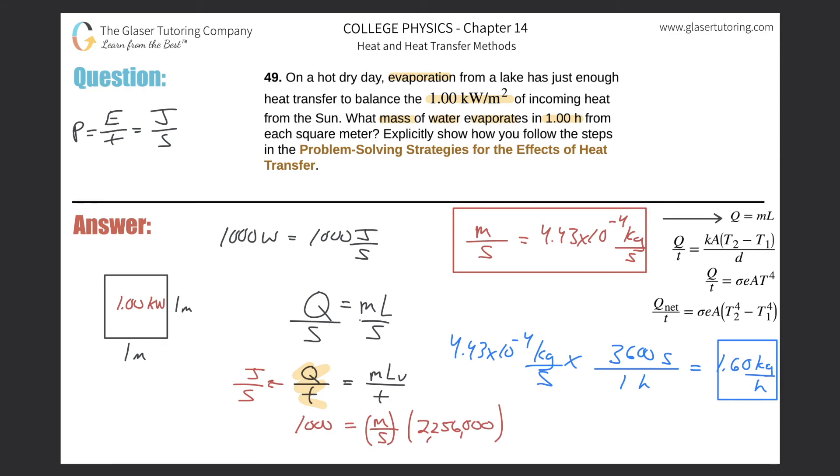So this is the amount of water, the mass of water that is evaporated per hour: 1.6 kilograms. Hopefully that makes sense.